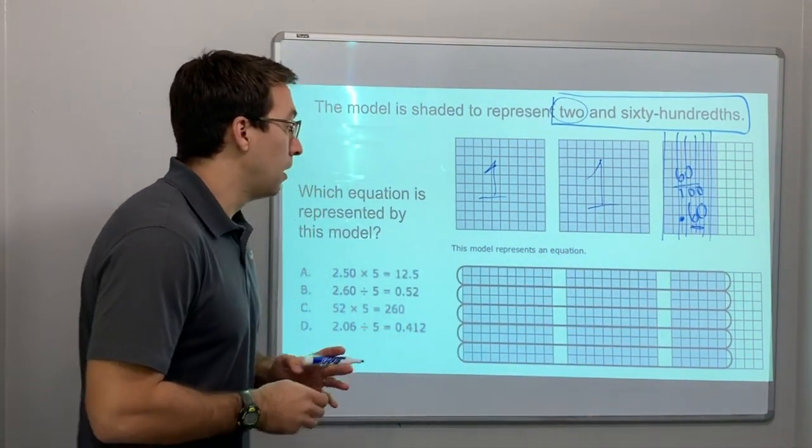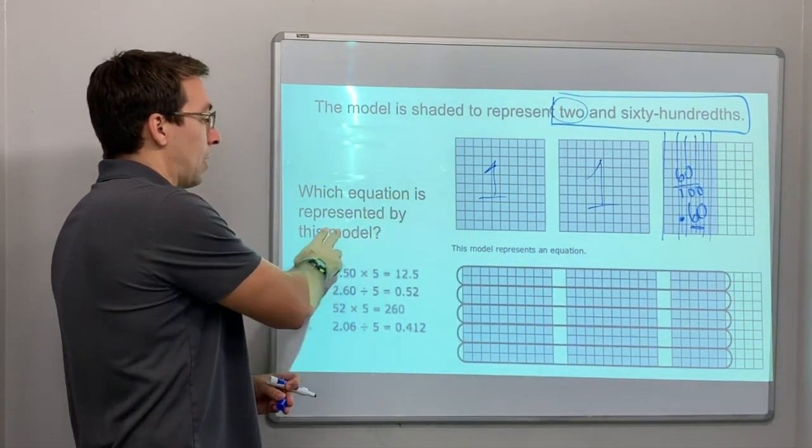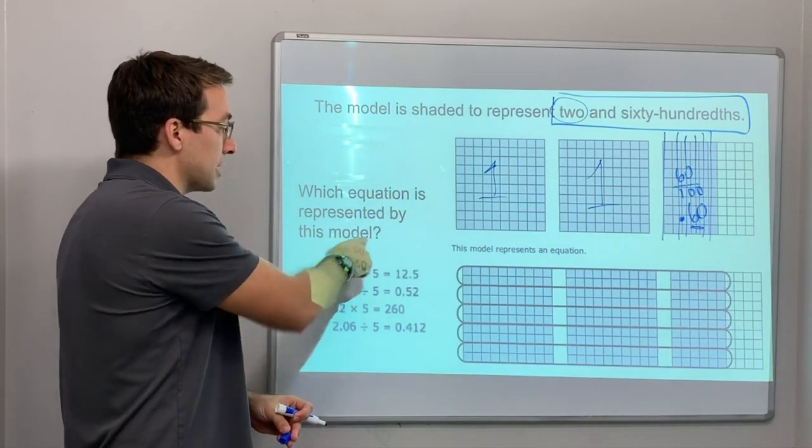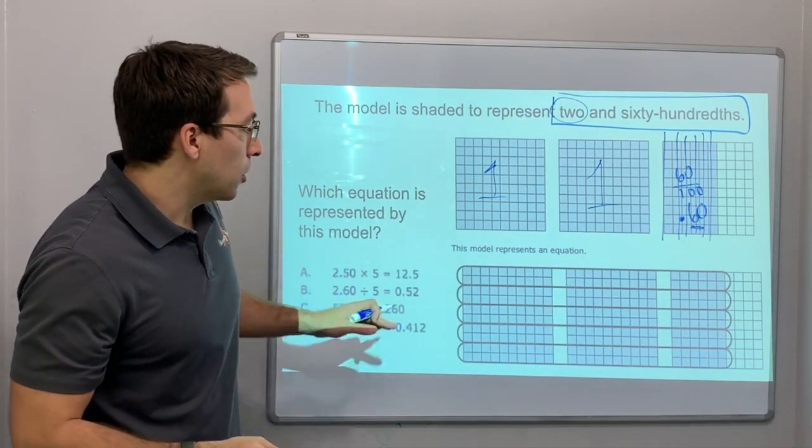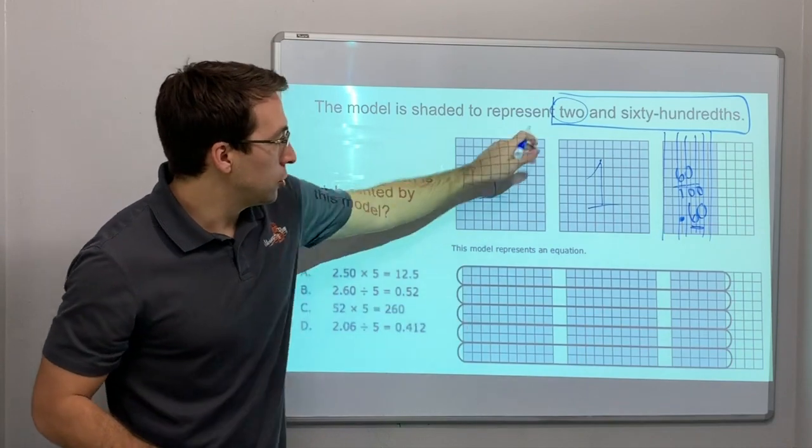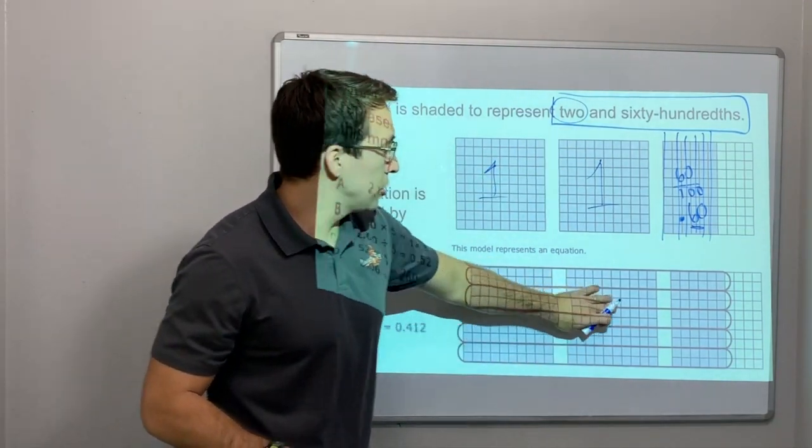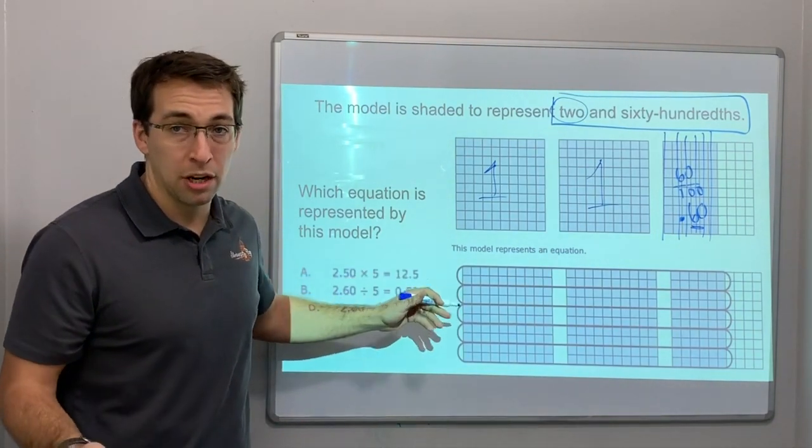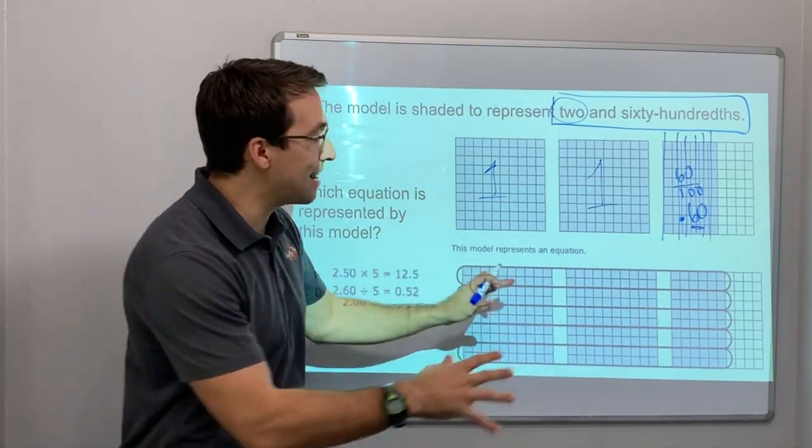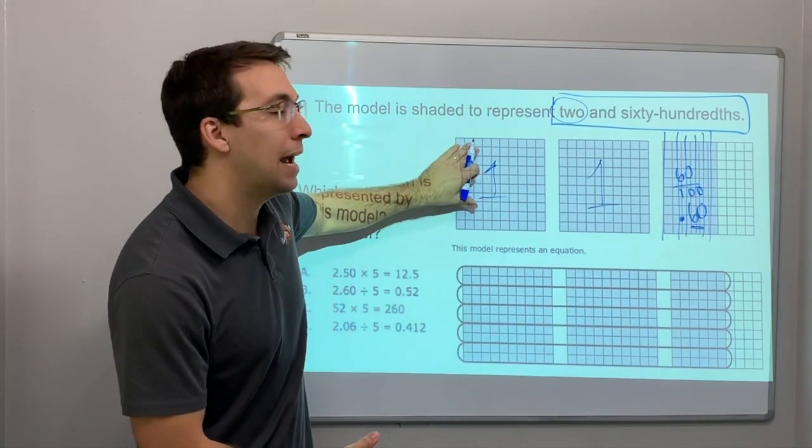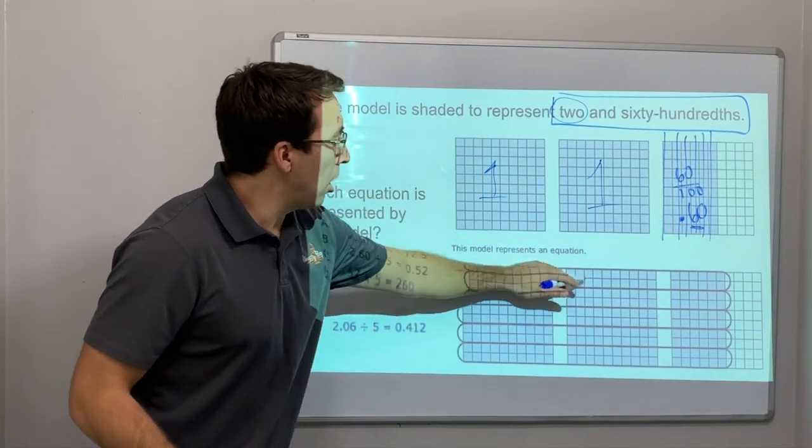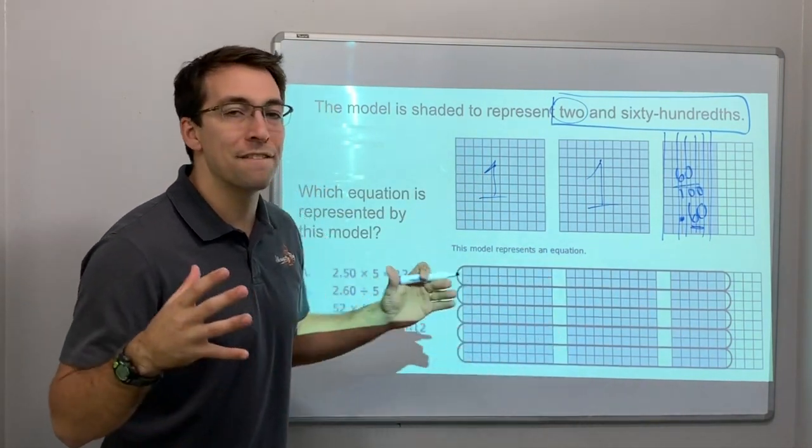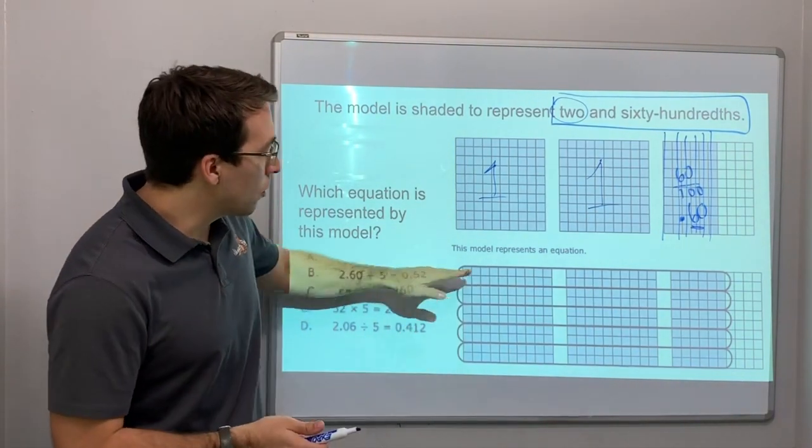So which equation is represented by this model? Look at, here's the model: 2 and 60 hundredths. Does that look like multiplication? No, it doesn't look like multiplication. We're not getting bigger. We have what we have. What is this doing? All of these circles are dividing it. And notice they're going across.